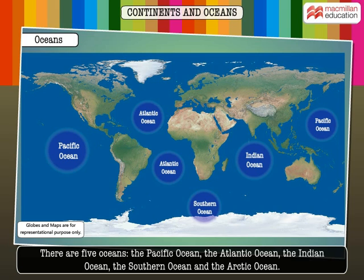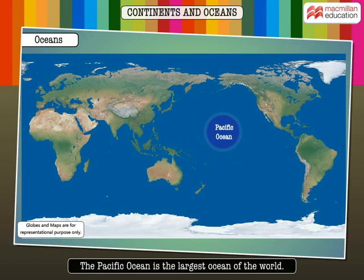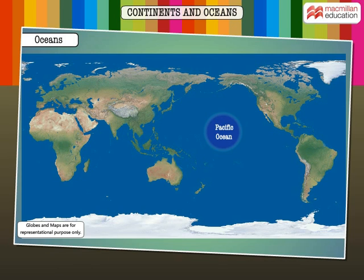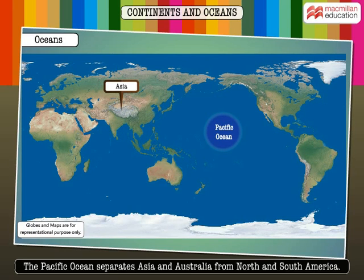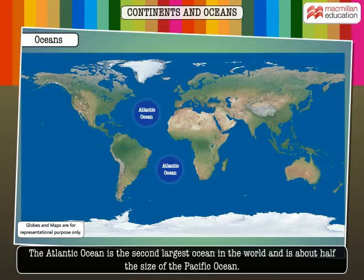The Pacific Ocean is the largest ocean in the world. It covers almost half of the Earth's water surface and separates Asia and Australia from North and South America. The Atlantic Ocean is the second largest ocean and is about half the size of the Pacific Ocean.